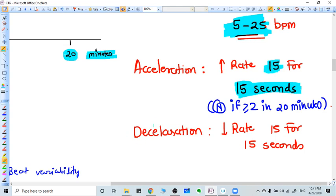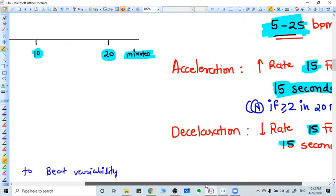Let's define deceleration. Like acceleration, deceleration means 15 seconds, heart rate decrease 15 or more, minimum 15. The fetal heart rate has to decrease 15 beats per minute at least for at least 15 seconds. So it is the simple definition of acceleration and deceleration.